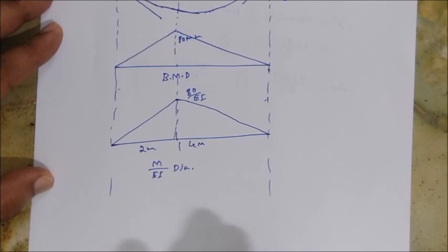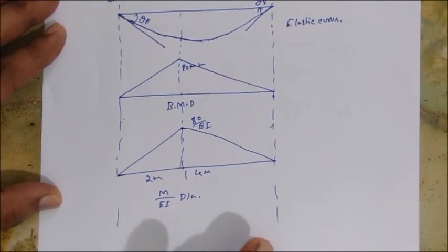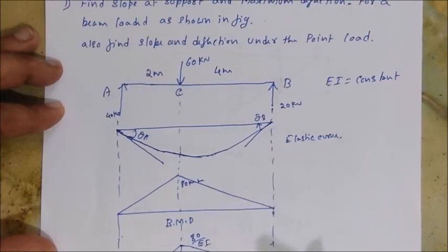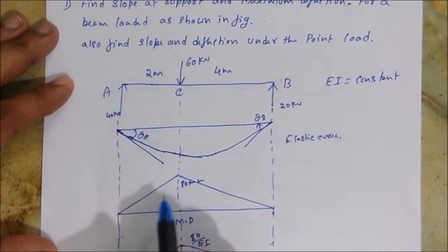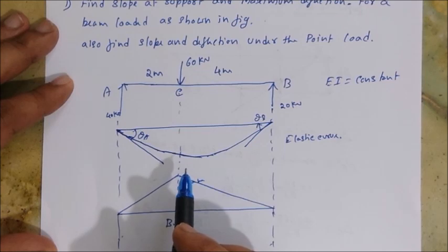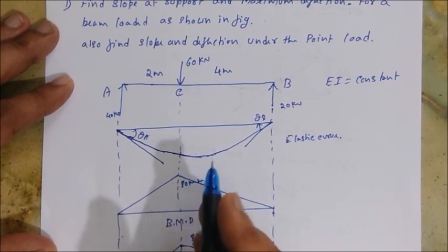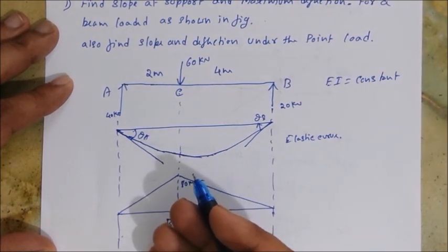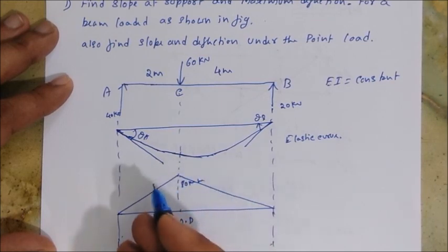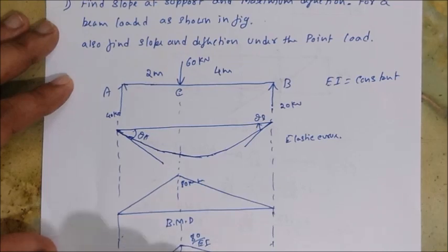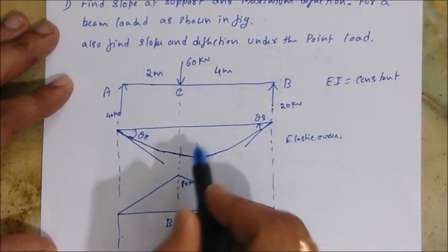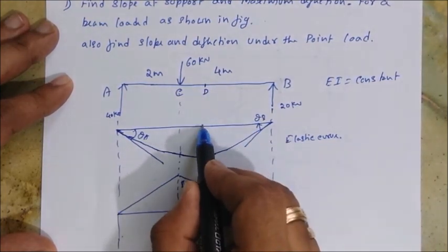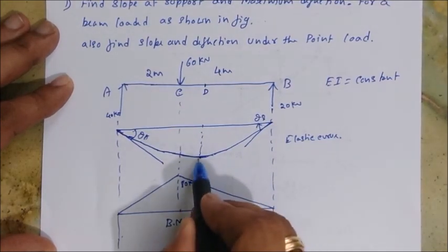Now, in the previous method we took a reference point at the center because the tangent there is horizontal — that is the point of maximum deflection. Here, the point of maximum deflection is unknown; I'll call it point D. Since D is the point of maximum deflection, I can draw the tangent from there.